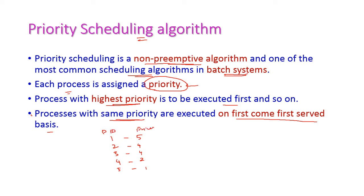Now, which process will be selected first? P5 will execute completely first. After that P4 will execute completely. Then P2 and P3 both have the same priority, so P2 will execute first, then P3. After that P1 will be executed last because P1's priority is 5 — so it executes last even though it may have come first in the ready queue.